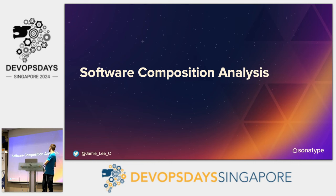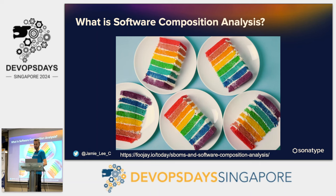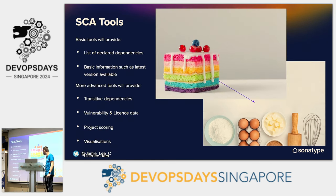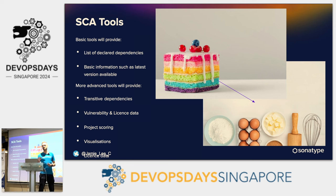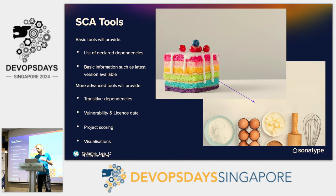So what is software composition analysis? This is something you should be doing if you're not. I like to use a cake analogy: a good SCA tool won't just look at the cake and say it's sponge, icing, and fruit — it will look at what's inside the sponge, what's inside the fruit. A basic tool gives you a list of dependencies and basic information like the latest version. But what we really want to know is what transitive dependencies are being pulled in, vulnerability and license data, and project health scoring.